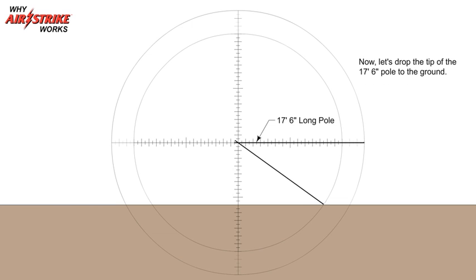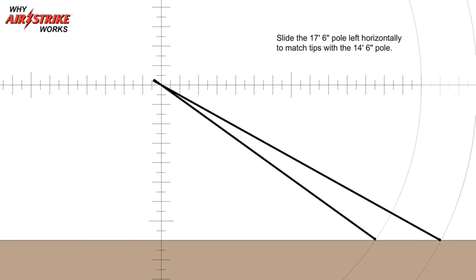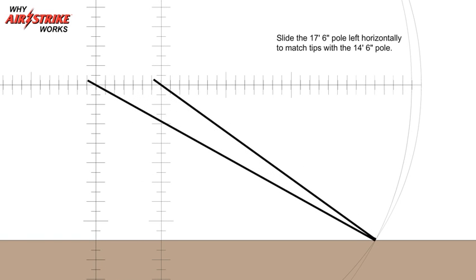Now, let's drop the tip of the 17-foot 6-inch pole to the ground. Then, we will slide the 17-foot 6-inch pole left horizontally to match tips with the 14-foot 6-inch pole.